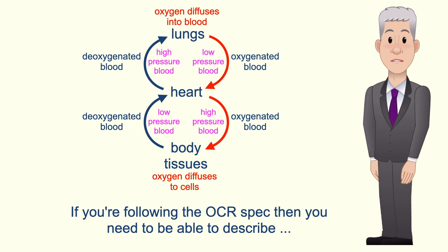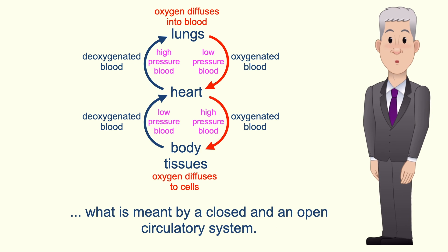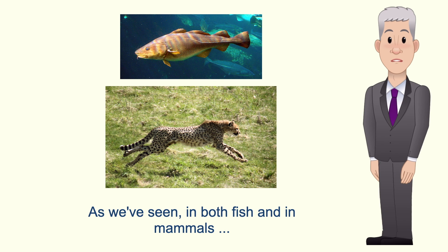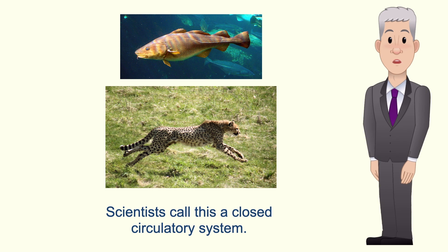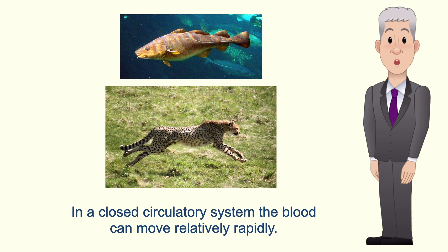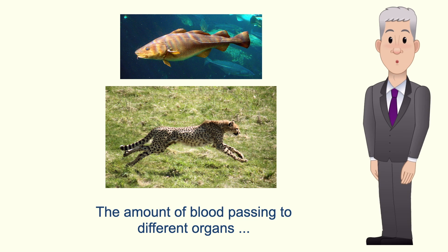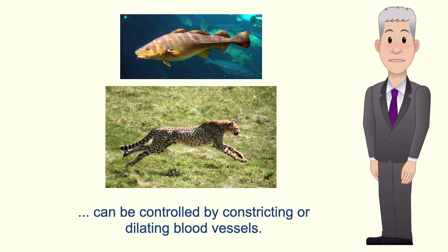Now if you're following the OCR spec then you need to be able to describe what's meant by a closed and an open circulatory system. As we've seen, in both fish and in mammals the blood is always contained in blood vessels as it travels to and from the heart. Scientists call this a closed circulatory system. In a closed circulatory system the blood can move relatively rapidly and the amount of blood passing to different organs can be controlled by constricting or dilating blood vessels.